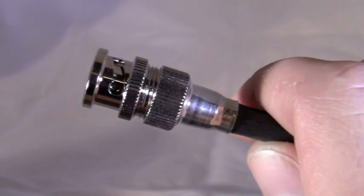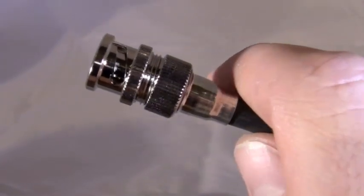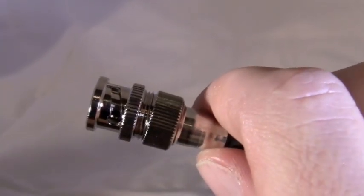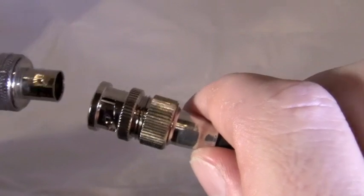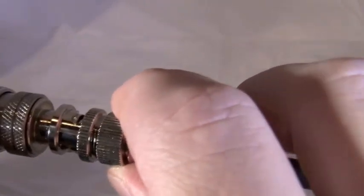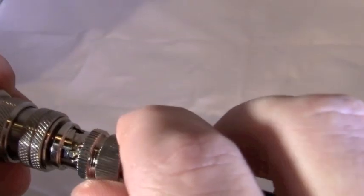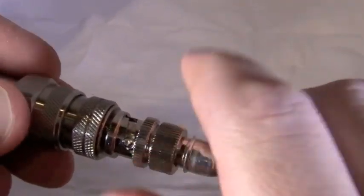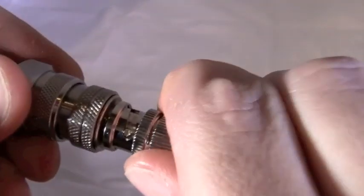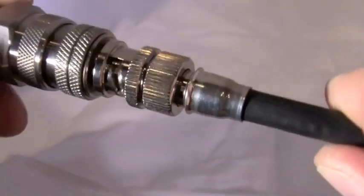The family of Belden High Definition Broadcast Quality connectors also features a special function called locking. Once the BNC has been connected to a component, the collar can be rotated and locked into position, resulting in even greater return loss performance and a more secure connection.